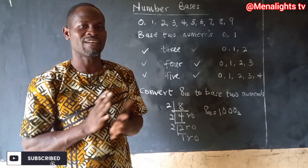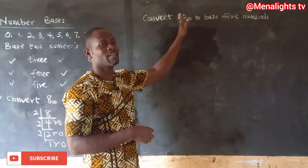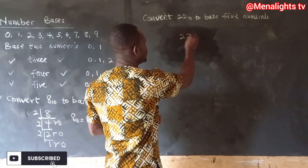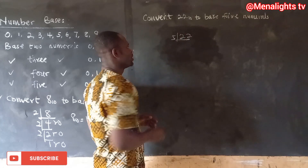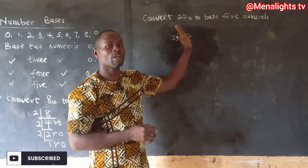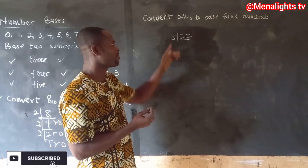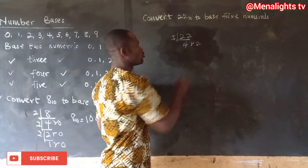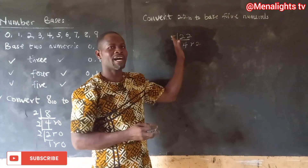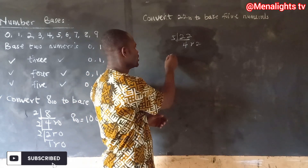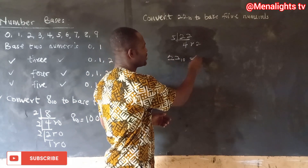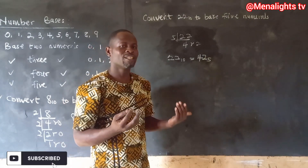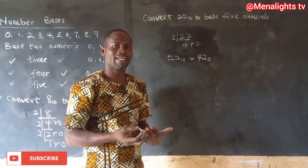Let's take another example. To convert 22 base 10 to base five, we divide 22 by five. Five goes into 22 four times with a remainder of two. Since five cannot go into four, we stop. So 22 base 10 is the same as 42 in base five.